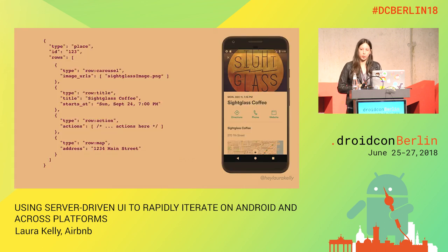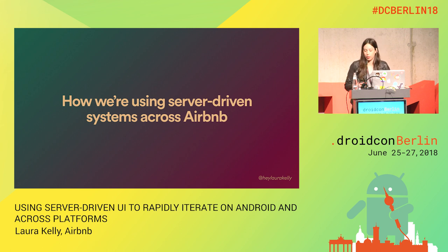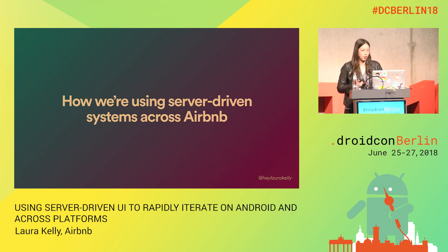That's how we take the API response and turn it into the UI on an Android device. We started talking to a lot of other teams at Airbnb after we built out this system, and many of the other product teams were having similar issues. They wanted to iterate quickly, be mobile-forward launching on all platforms, and they often had changing product specs.